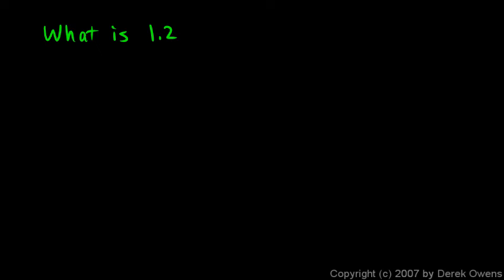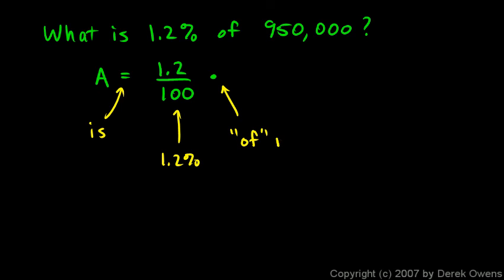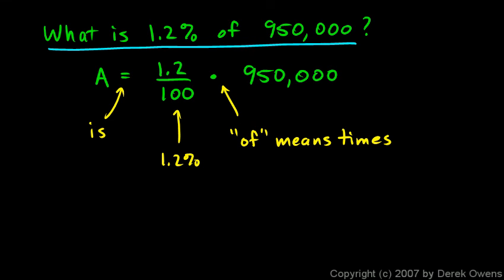We can ask the question: what is 1.2 percent of nine hundred and fifty thousand? We translate that directly into an equation. The thing I'm looking for, a, is — that 'is' becomes an equal sign. One point two percent means 1.2 hundredths. And the word 'of' in math gets translated into multiplication. So 'of nine hundred and fifty thousand' means times nine hundred and fifty thousand.